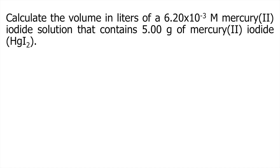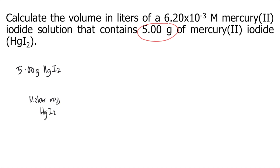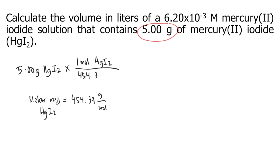In this problem, we are given 5 grams of HgI₂, so we will start with that given. The first thing we do is convert grams into moles, so we need the molar mass of HgI₂. Computing the molar mass of HgI₂ gives about 454.39 grams per mole — meaning 1 mole of HgI₂ is equivalent to 454.39 grams of HgI₂.